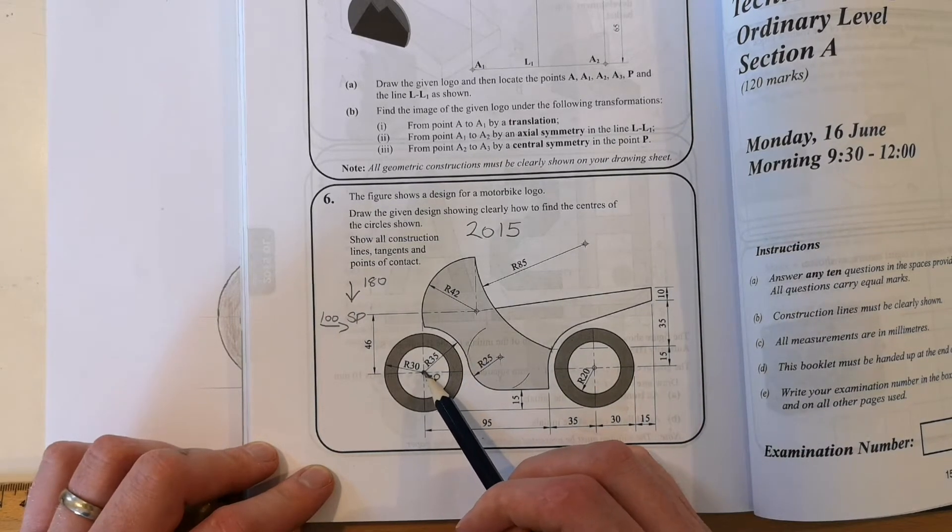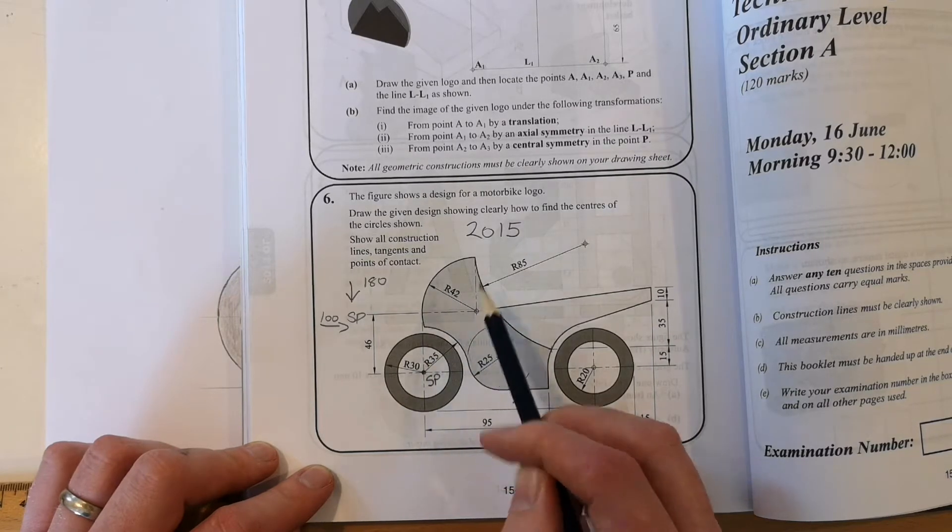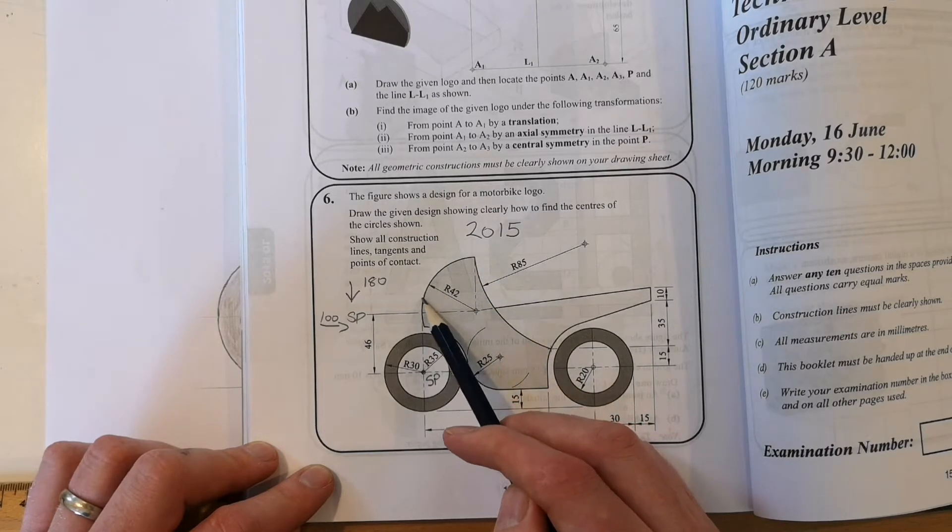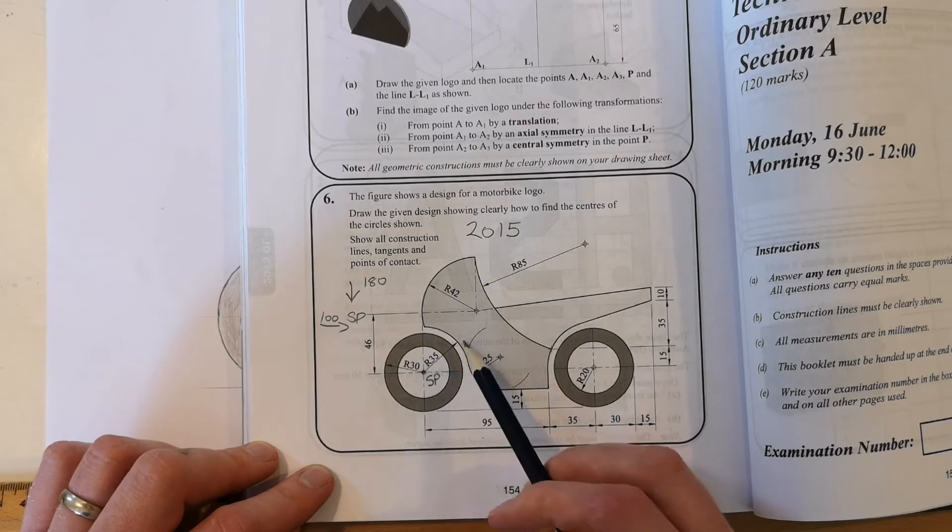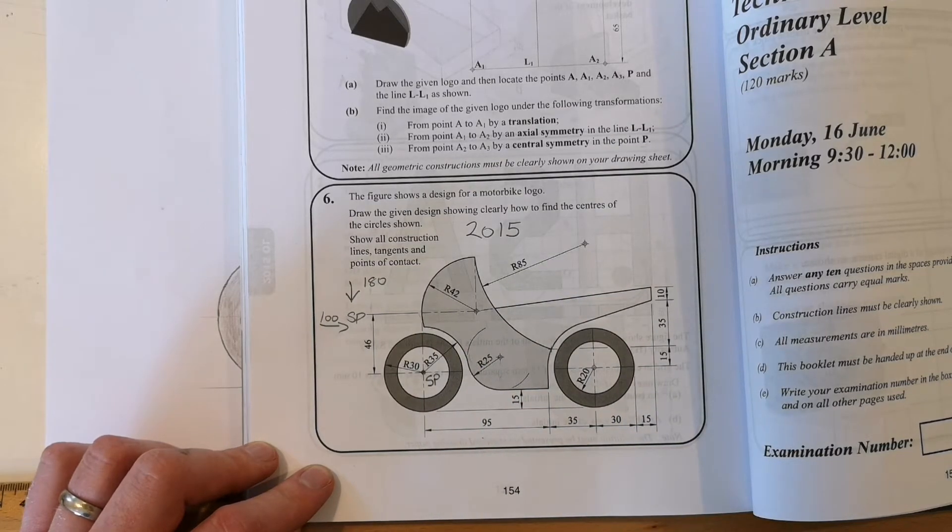Following that, you go straight up from the starting point a distance of 46. You go back in 42, and I want you to get this radius 42 curve drawn all the way down to meet this radius 35 curve around the front wheel.